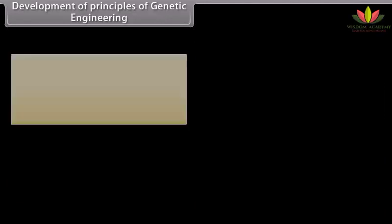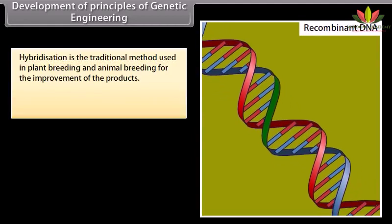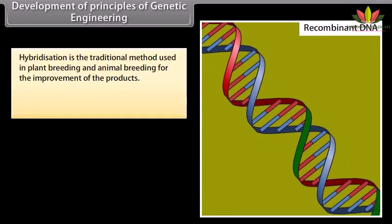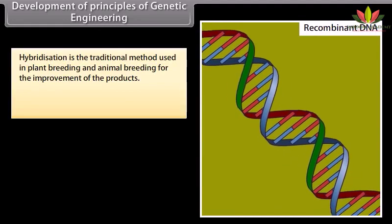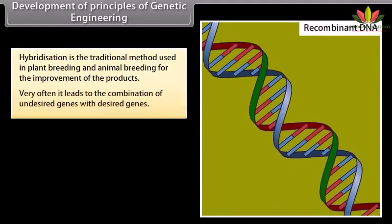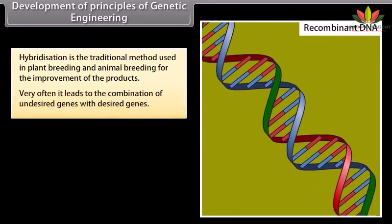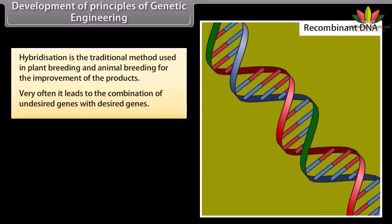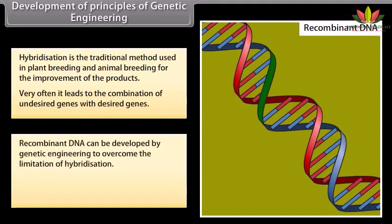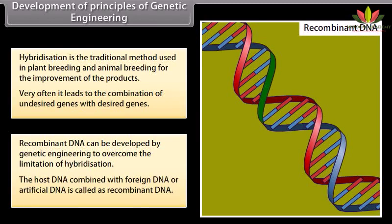Development of principles of genetic engineering. Hybridization is the traditional method used in plant breeding and animal breeding for the improvement of products. Very often it leads to the combination of undesired genes with desired genes. Recombinant DNA can be developed by genetic engineering to overcome the limitation of hybridization.